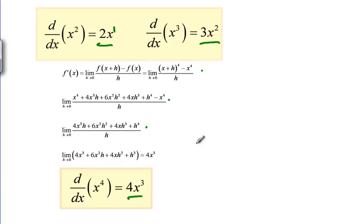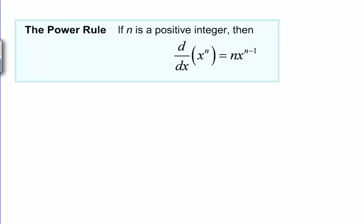So we would guess that maybe there's a general pattern of X to some number, the derivative is going to be that number times X raised to one less number. So NX to the N minus 1. It turns out that this is true and we're going to call it the power rule.